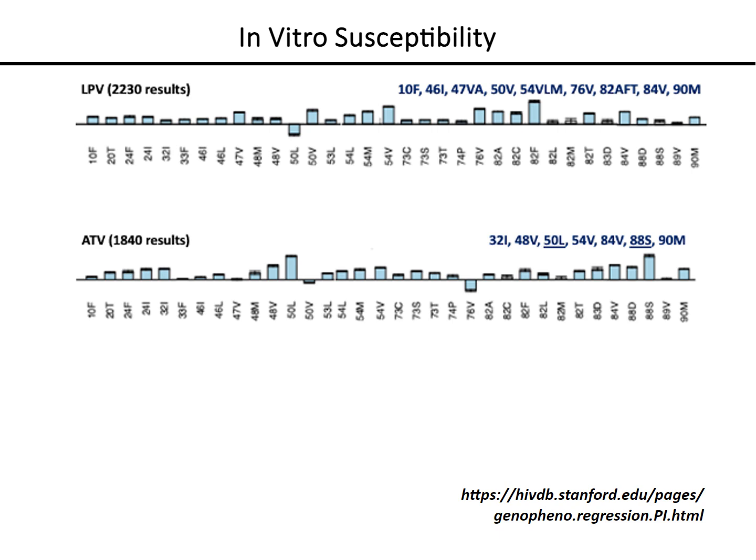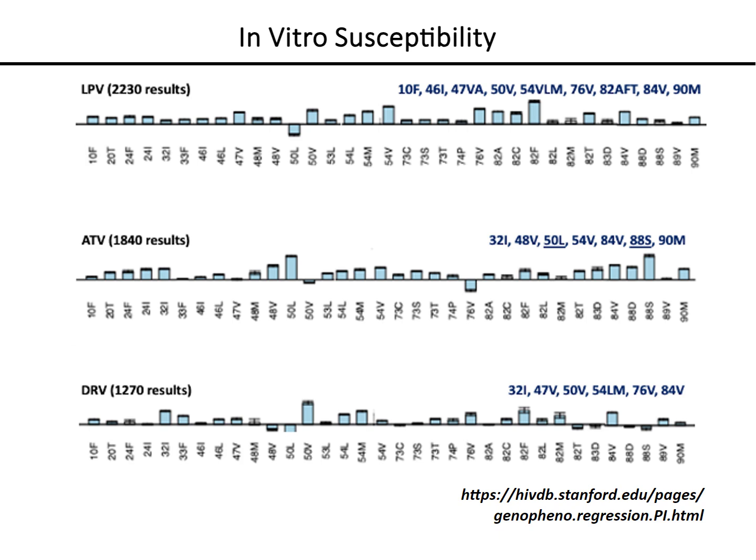This figure shows the regression analysis for darunavir. High levels of darunavir resistance can occur in viruses from people who have had virological failure on a previous protease inhibitor and then develop virological failure on a salvage regimen containing darunavir. Two or three of the mutations shown here, in combination with two or three very specific accessory mutations, are usually found in such patients.